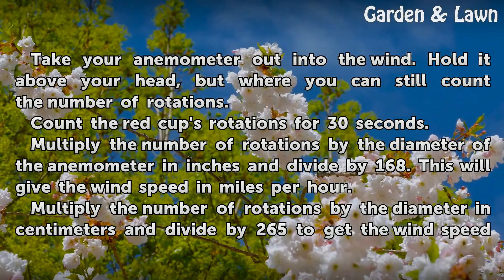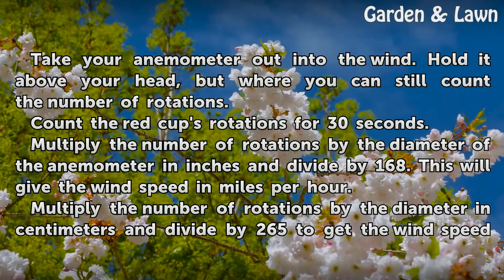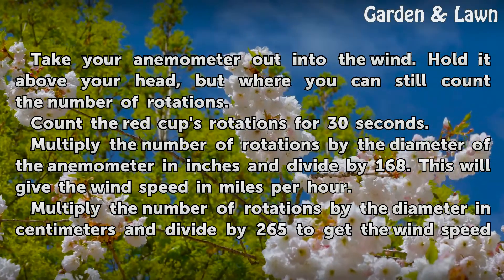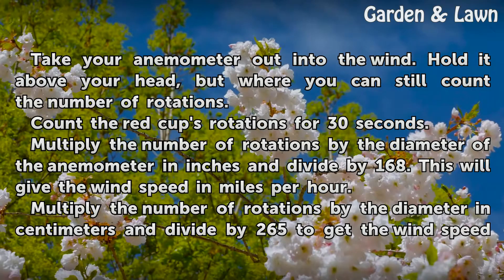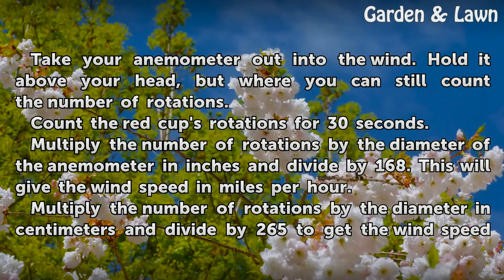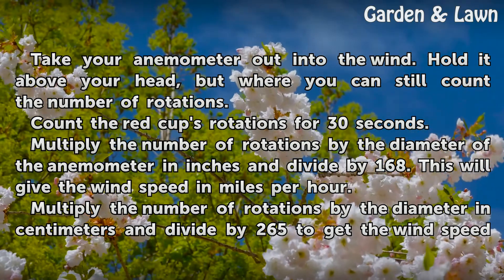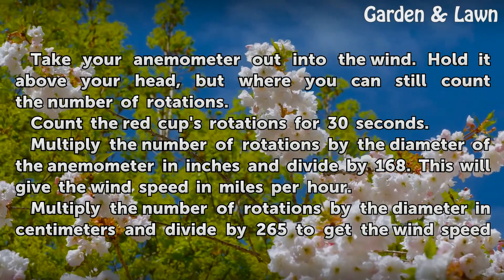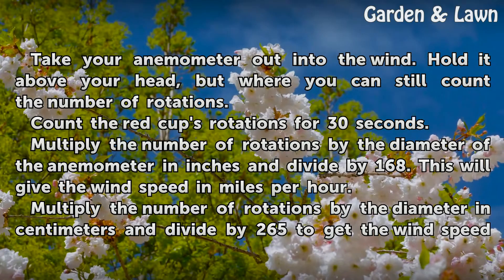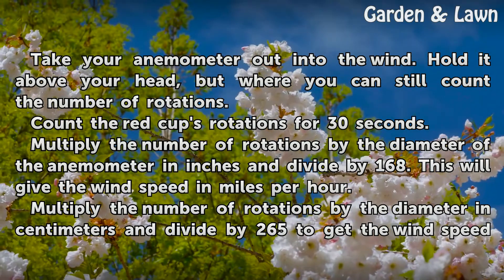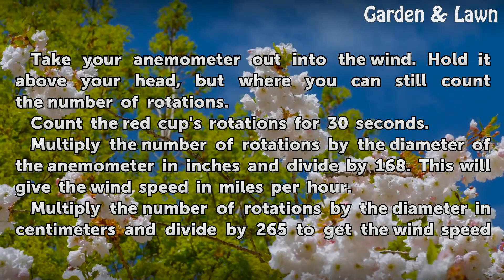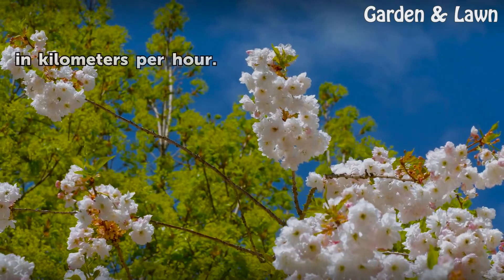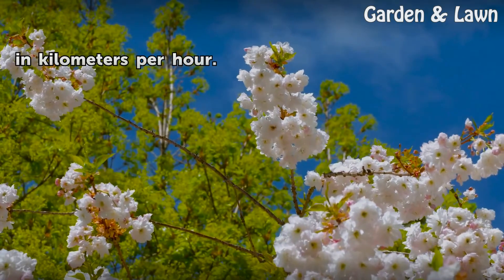Multiply the number of rotations by the diameter of the anemometer in inches and divide by 168 — this will give the wind speed in miles per hour. Multiply the number of rotations by the diameter in centimeters and divide by 265 to get the wind speed in kilometers per hour.